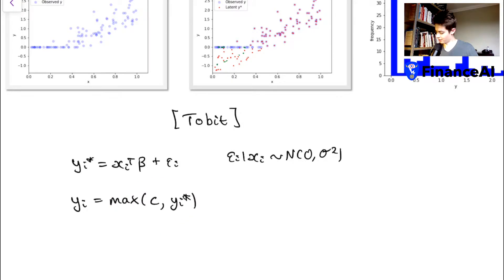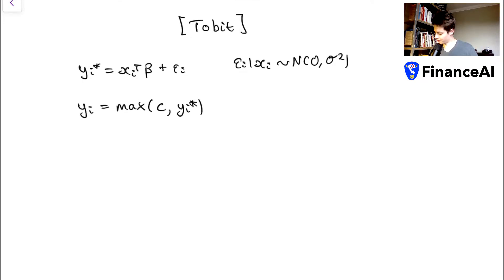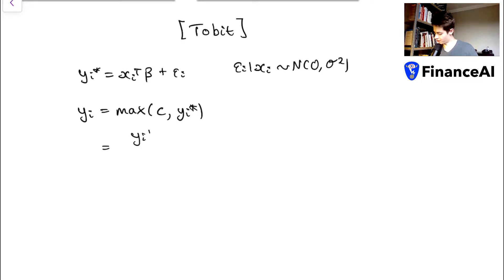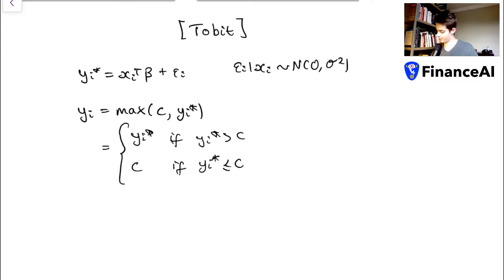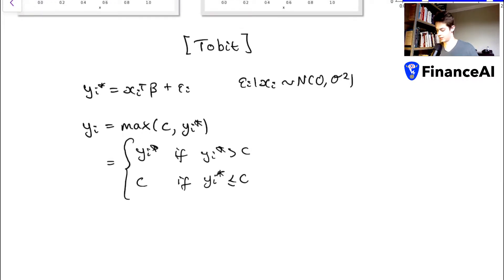This is intuitive: when the latent dependent variable is below the value c, it gets censored to the value c. Another way of writing it is simply: yi equals y* if yi* is greater than c, and equals c if yi* is less than or equal to c. That might be easier to work with, but they're exactly the same thing.